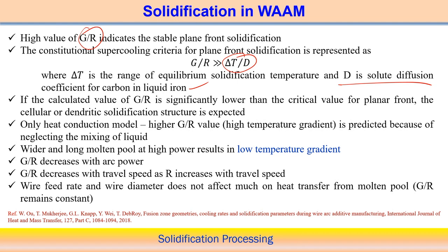If only heat conduction is used to calculate temperature distribution — solving only the heat conduction equation — higher G/R values are usually predicted by the model, because this neglects metal flow and liquid mixing in the molten pool. Since liquid mixing is neglected, the predicted G/R from a conduction-only heat transfer model is usually high. Therefore, it is necessary to incorporate metal flow behavior to calculate G/R accurately, using a heat transfer and fluid flow model.